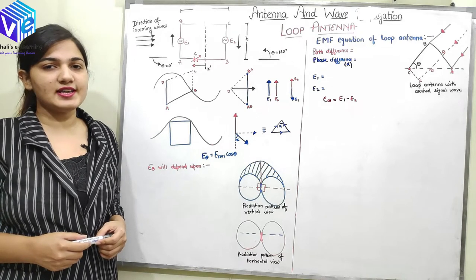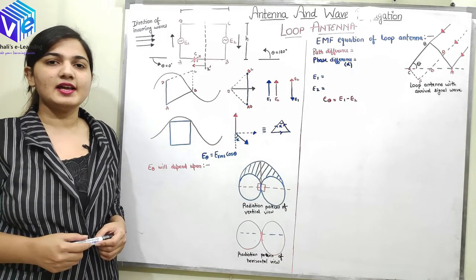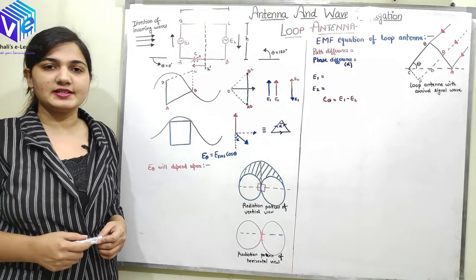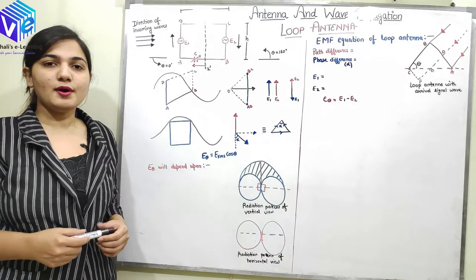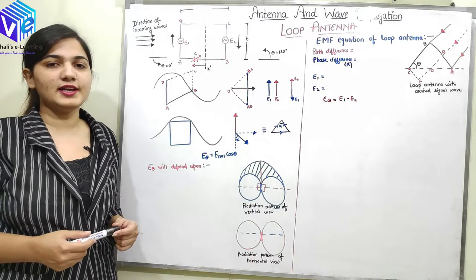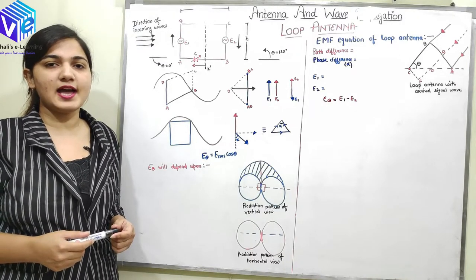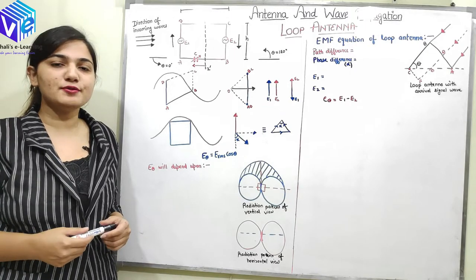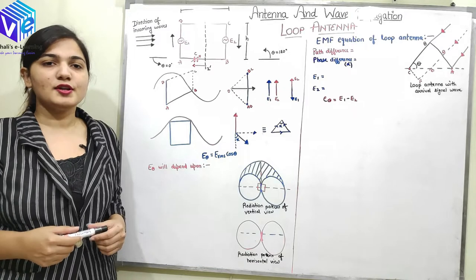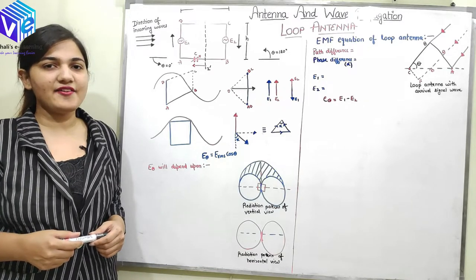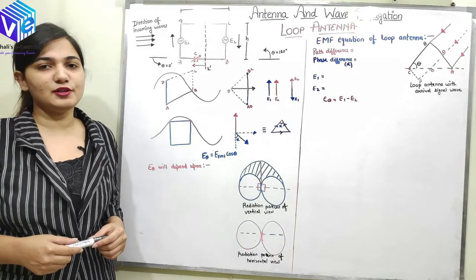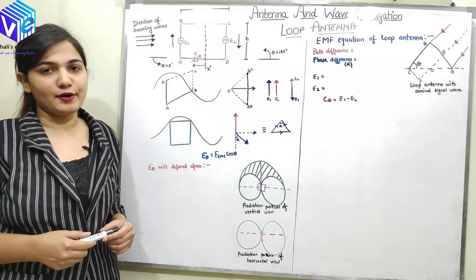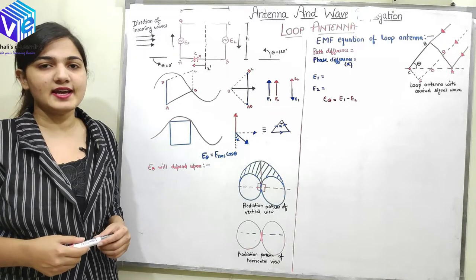Welcome to this video lecture series on antenna and wave propagation. In this video lecture, we will discuss the induced EMF in the loop antenna when it is used as a receiver. I said in my previous video that a loop antenna can be easily used as a receiver rather than a transmitter. Now in this video, I will derive the equation of the induced EMF in the loop antenna when an incoming EM wave is incident on it. Without wasting any time, let us begin.